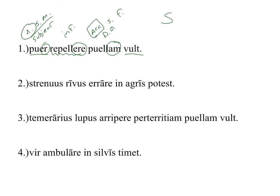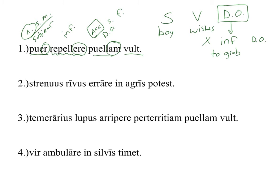My word order is subject, verb, normally a direct object. The infinitive in Latin basically replaces the direct object. Because it is a verb, it can have its own direct object, but because it doesn't have a personal ending like T or NT, it cannot have a regular subject. So when I translate this sentence: puer — the boy — the verb, which is 'wishes,' and the infinitive — not to grab, it's to drive away, my bad — and then my direct object, the girl. I end up with: the boy wants to drive away the girl.